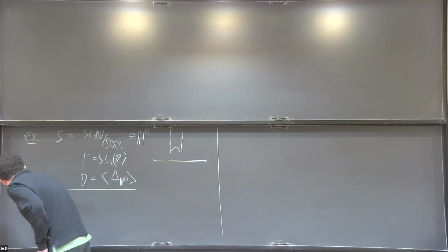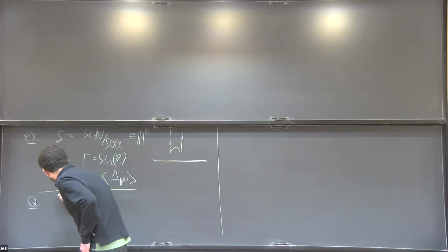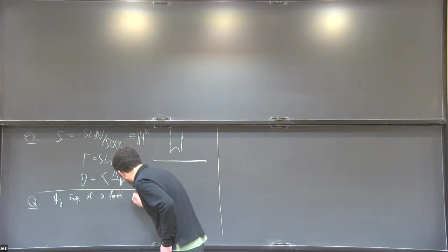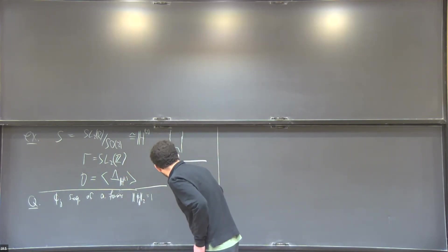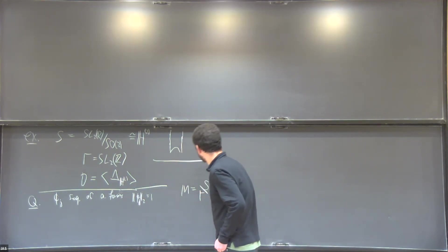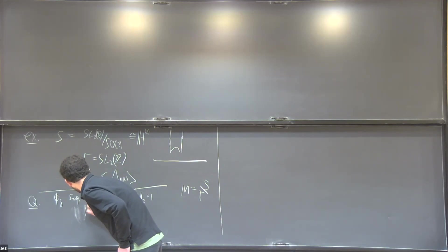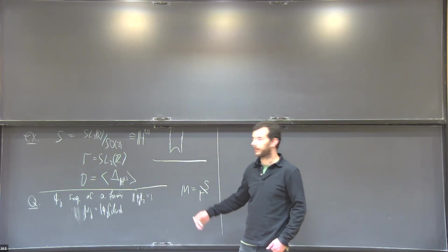Here's the basic question. Suppose phi_j is a sequence of automorphic forms, and we assume that they are normalized to L^2 norm 1 on the space. We can define probability measures mu_j by taking the absolute value of phi_j squared times the uniform probability measure on the space.